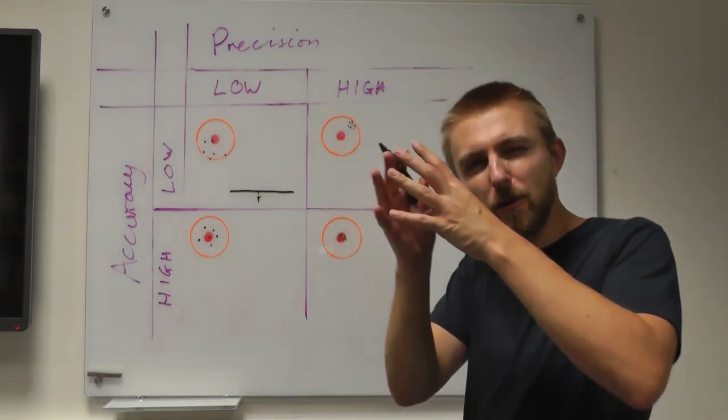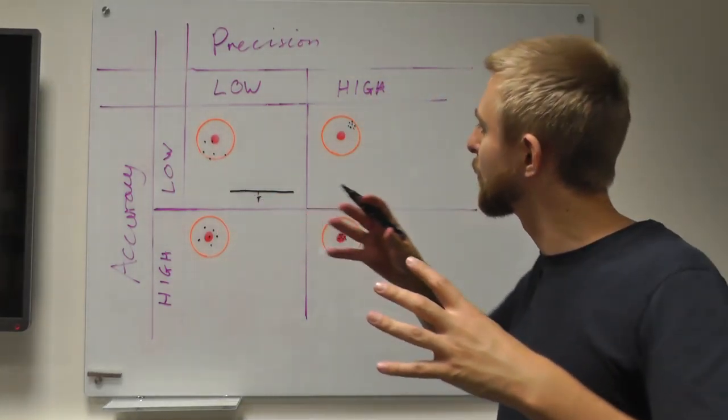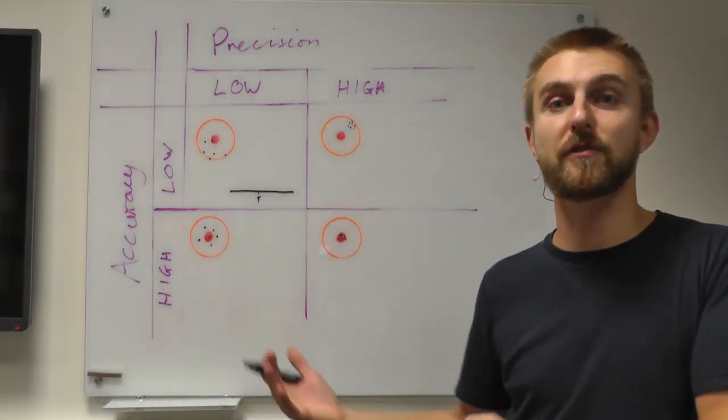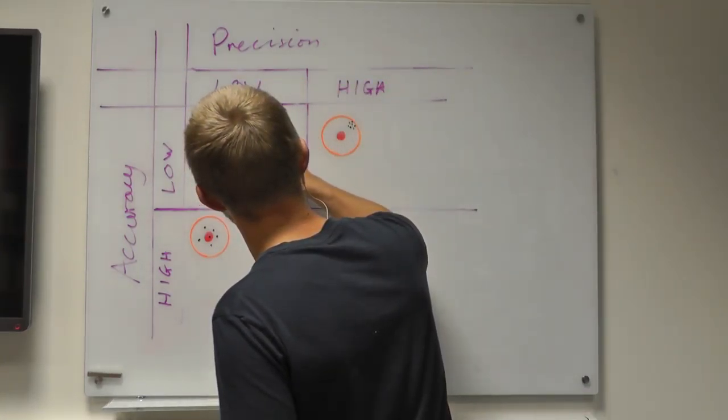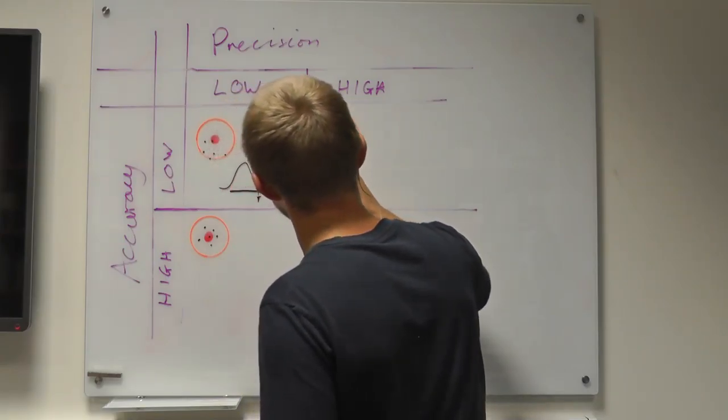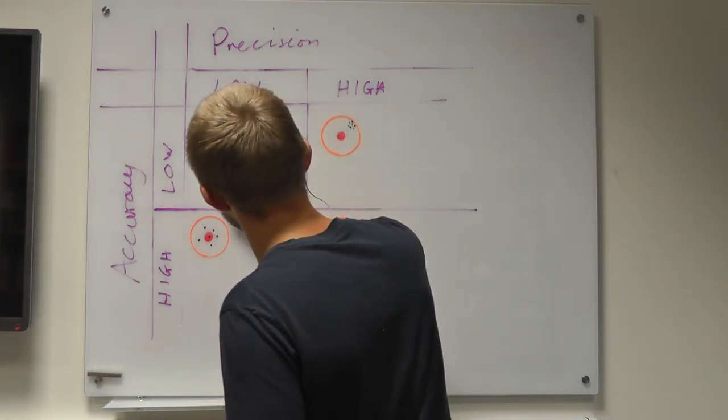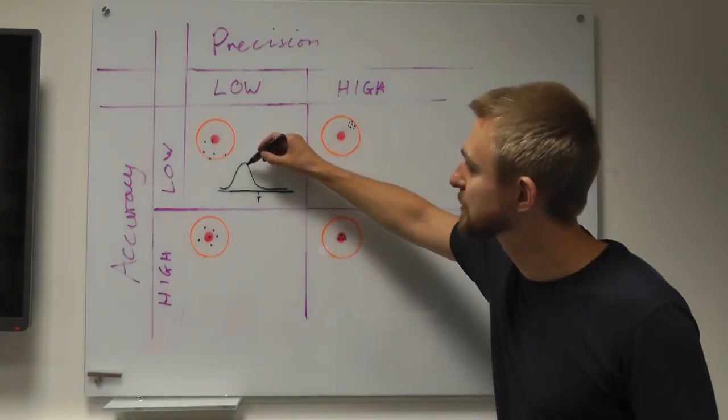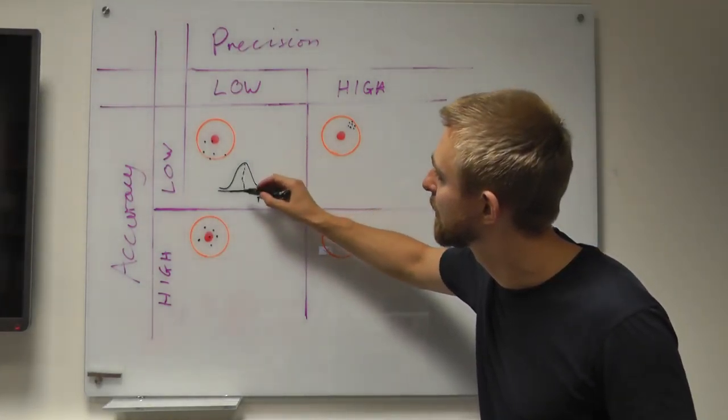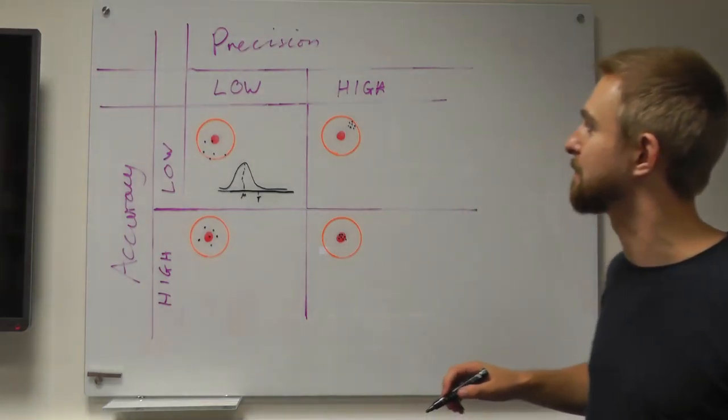Right? This has got not only quite a wide spread, but also the mean is not centered around our target. So it would look something like this. Okay? We'll extend the axis out of it here. Okay? So quite a wide distribution, and the mean, which is over here, is not aligned with our target.